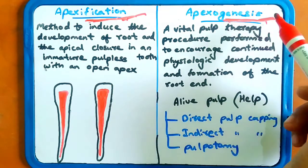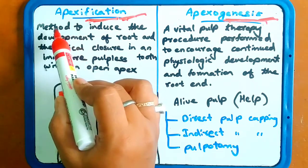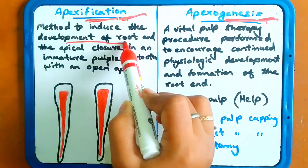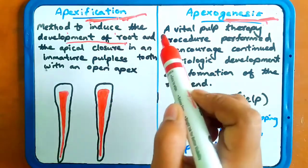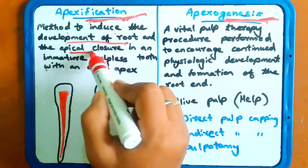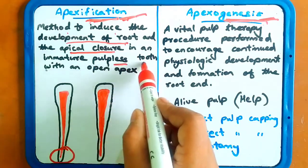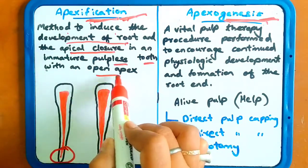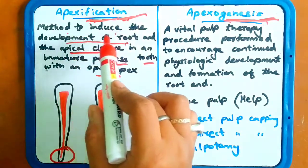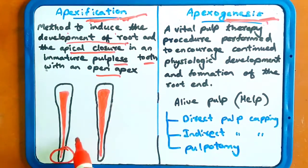Genesis means to generate and fixation means to fix. The definition of apexification is: a method to induce the development of the root and the apical closure in an immature pulpless tooth. If the pulp is pulpless and immature, then apexification is done and the open apex is present.